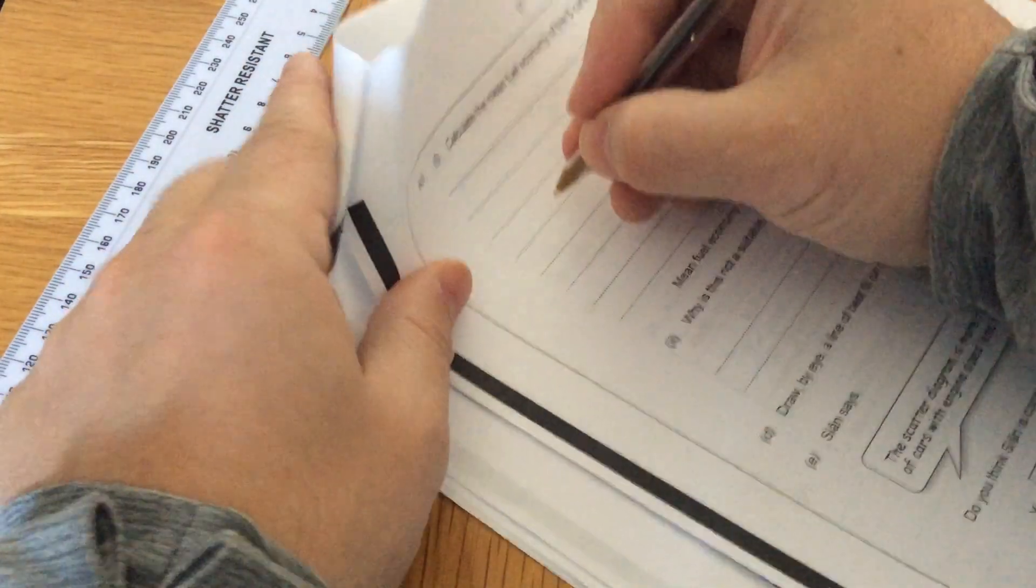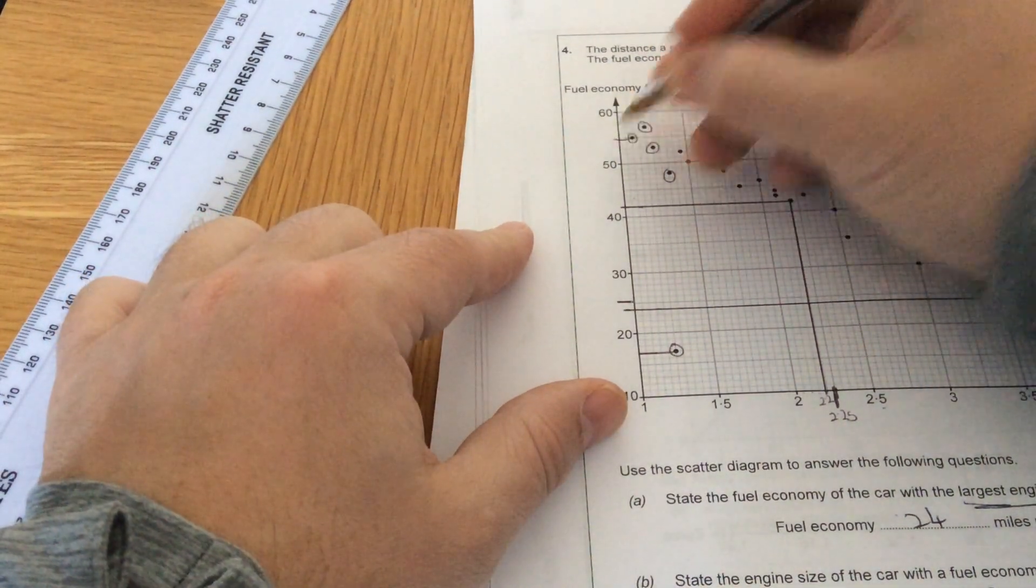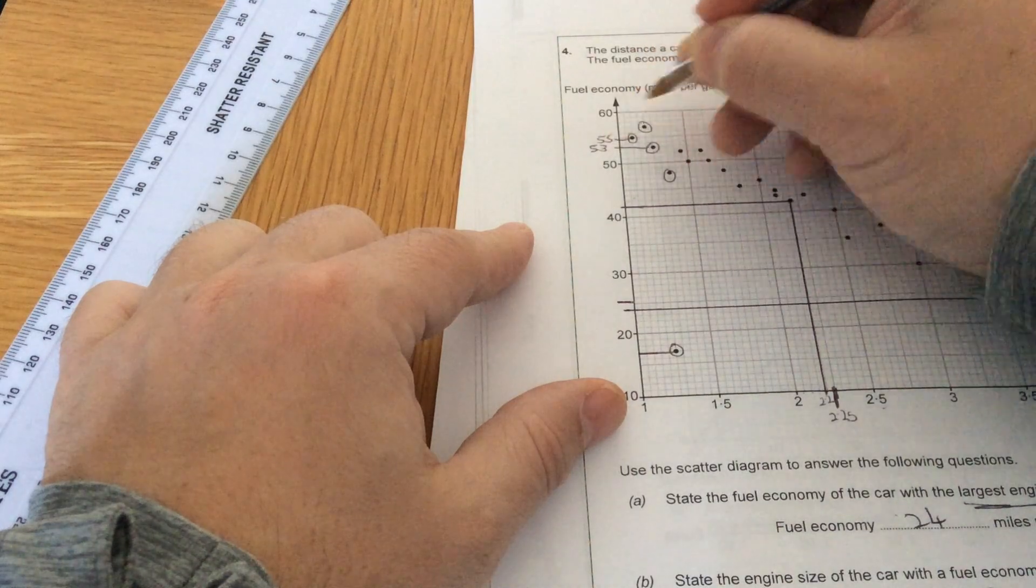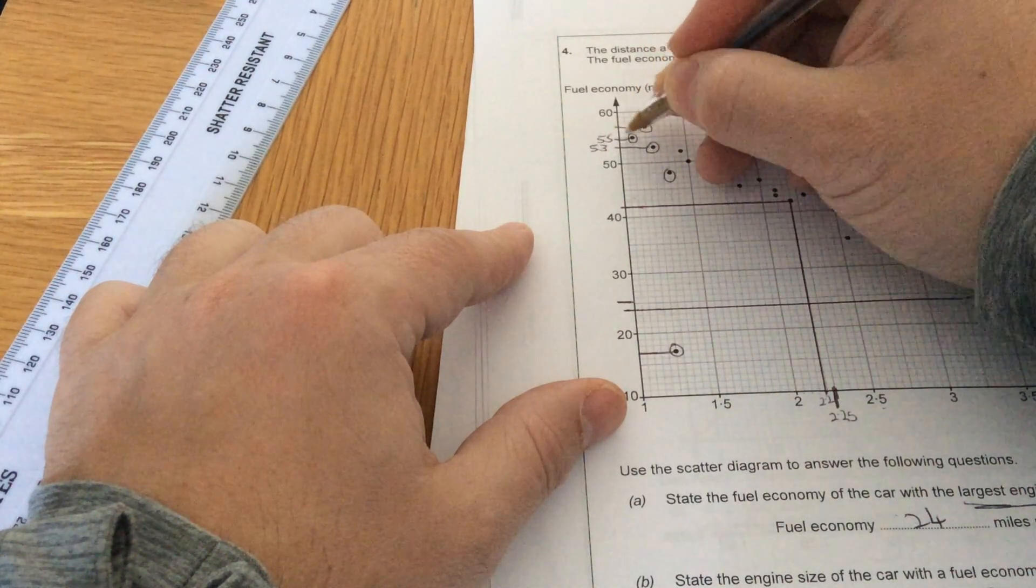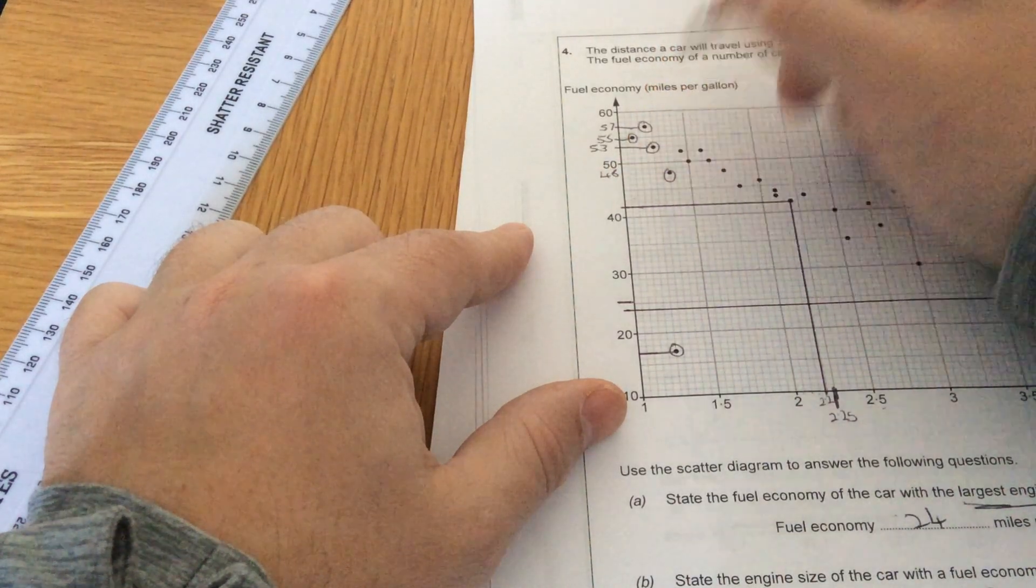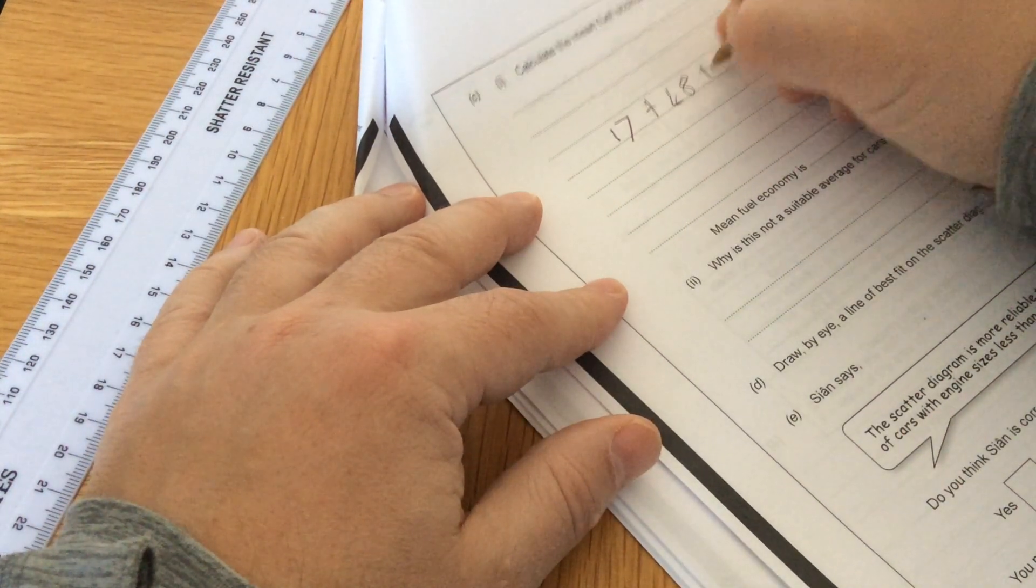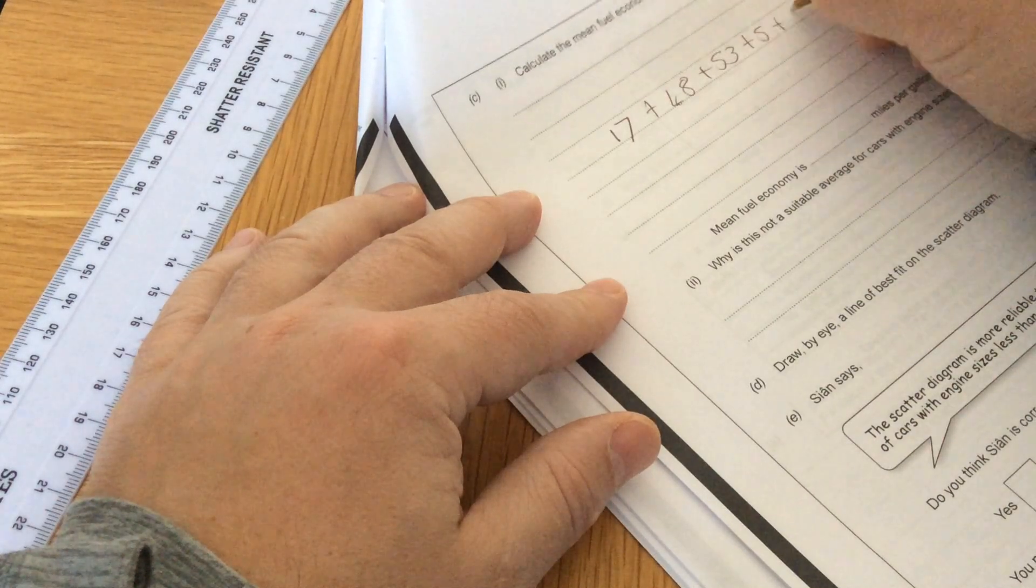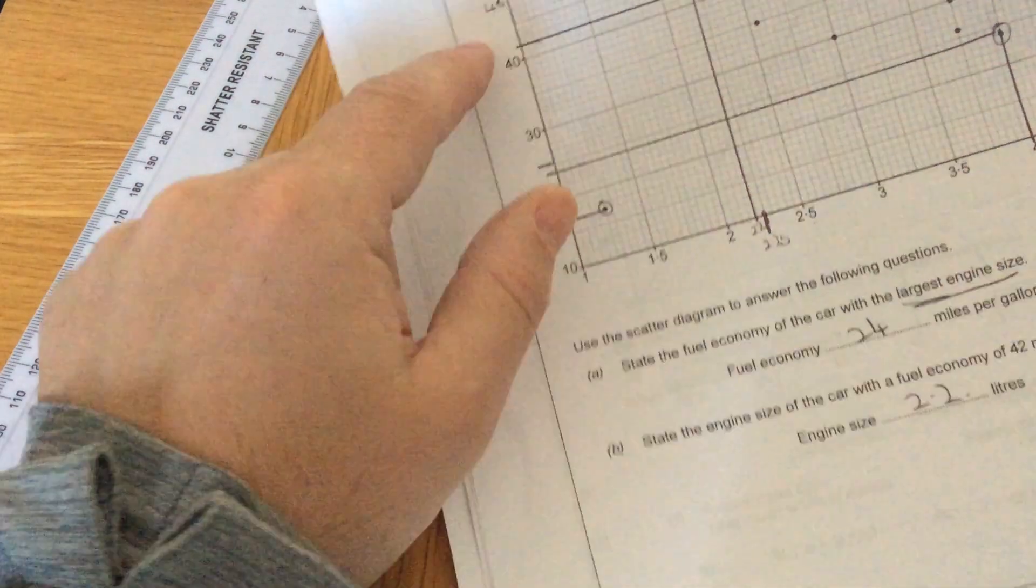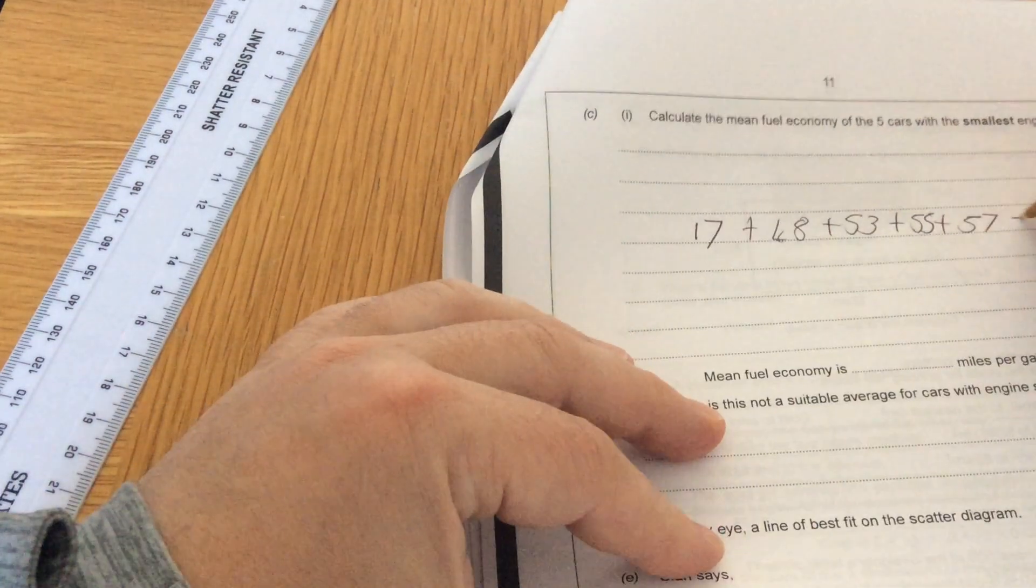So we've got 17. The second one, we've got 55. We've got 53, 55, 56, 57. And we've got 48. So 48, 53, 55, and 57. So let's double check: 17, 48, 53, 55, 57. So I'm going to add up those 5 numbers.